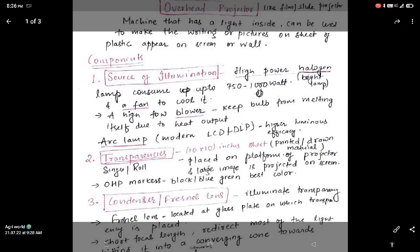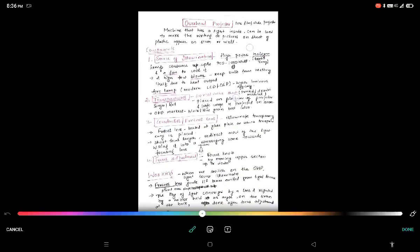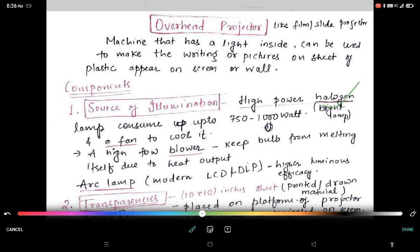Source of illumination. A high lamp technology of overhead projector is typically very simple compared to the modern LCD or DLP video projector. Most overhead projectors uses extremely high power halogen lamp up to 750 to 1000 watt. Halogen lamp fairly dim and yellow. So high flow of blower is required to keep the bulb from melting itself due to high heat output.